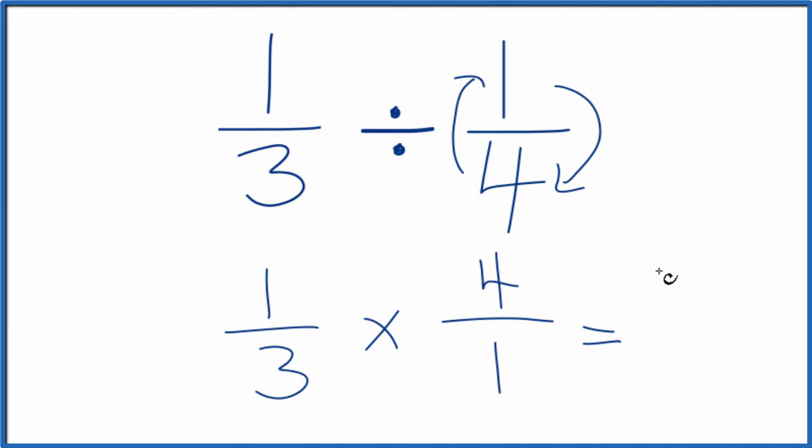Now we can just multiply. One times four, that's four. Three times one, that's three. So one-third divided by one-fourth, that gives us four-thirds.